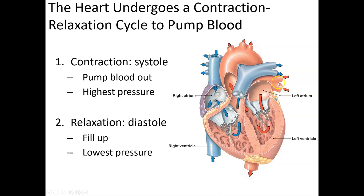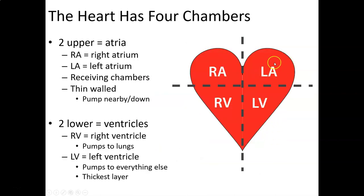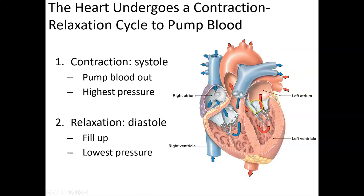From the right atrium, we go through the right AV valve — the tricuspid valve, which has three cusps — into the right ventricle. The right ventricle contracts and pushes blood through the pulmonic valve, also called the pulmonary semilunar valve, into the pulmonary trunk. That splits into right and left pulmonary arteries, delivering blood to the lungs. At the alveoli, blood picks up oxygen and releases CO2, then returns via the pulmonary veins to the left atrium. The pulmonary trunk is shown in blue because it carries deoxygenated blood — one of the few places where the artery has less oxygen than the vein.